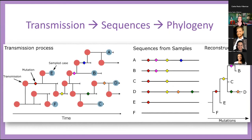This allows us to reconstruct an approximation of the transmission history that happened in real life and see how the virus has changed over time. On top of that, because we know when and where these samples were taken, we can incorporate things like seeing how the virus has moved through time. We can even put things like symptoms or hosts on here, so we can really start to infer some interesting characteristics of the virus and its hypothetical ancestors back in time.